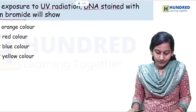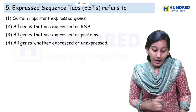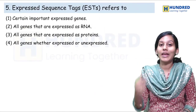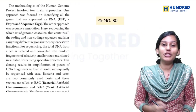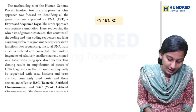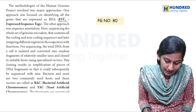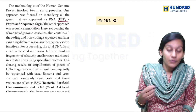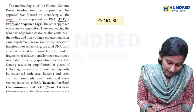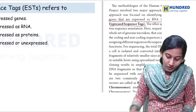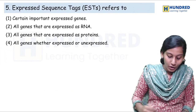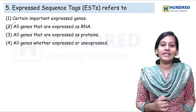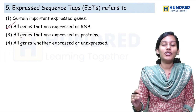So the next question: Expressed Sequence Tags — EST — refers to, in the methodologies of the Human Genome Project. The same line is given — EST — which is basically identifying all the genes that are expressed as RNAs. So what would be the right answer here? All the genes that are expressed as RNAs. Five questions done — I think you would have got an idea.